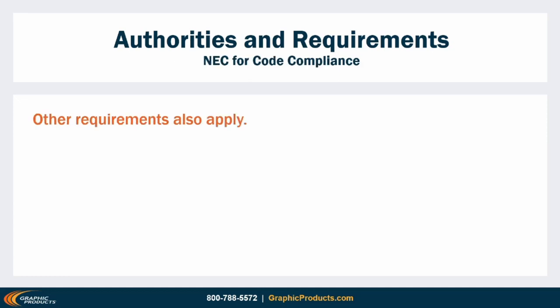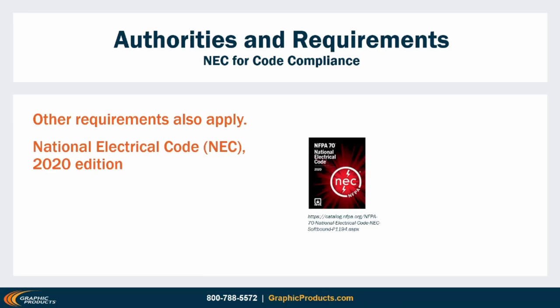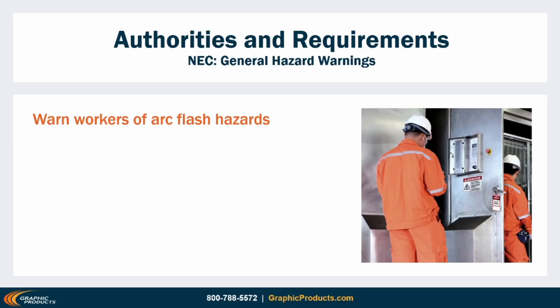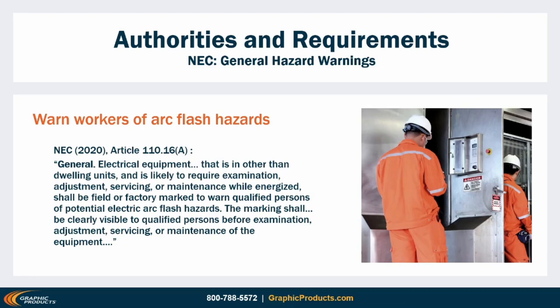OSHA focuses on safety in the workplace, but other legal requirements show up from different angles. In all 50 states, some version of the National Electrical Code, or NEC, is mandatory as part of building codes. The 2020 edition of the NEC has two requirements for arc flash labels, both found in Article 110.16. Requirement A calls for general arc flash hazard warnings: where electrical equipment likely to need examination, service, or maintenance while energized, a marking is required to warn people about the potential for arc flash. No specific details are required, but the code calls out that warnings are intended for qualified persons and must be visible before work is performed.